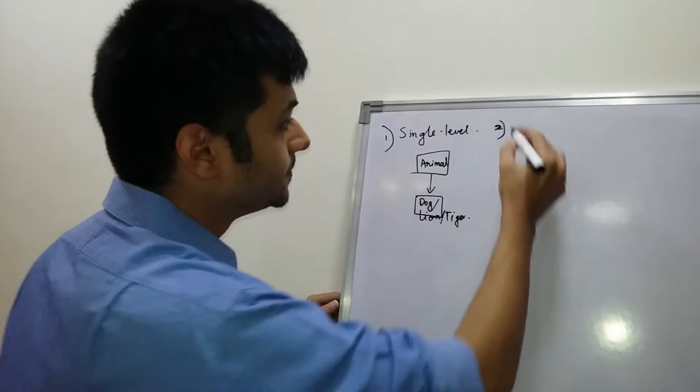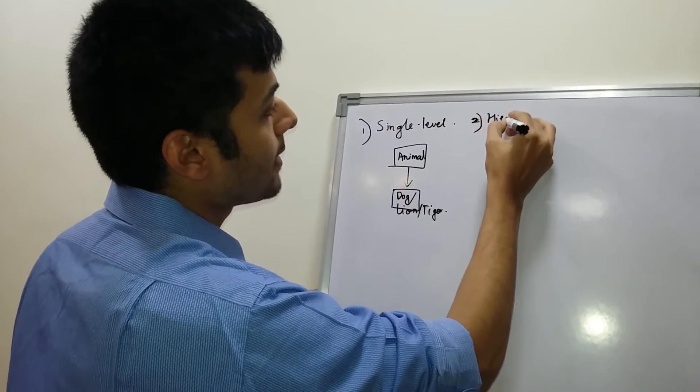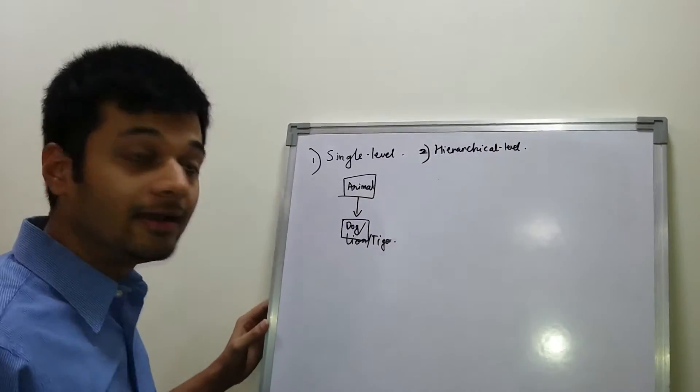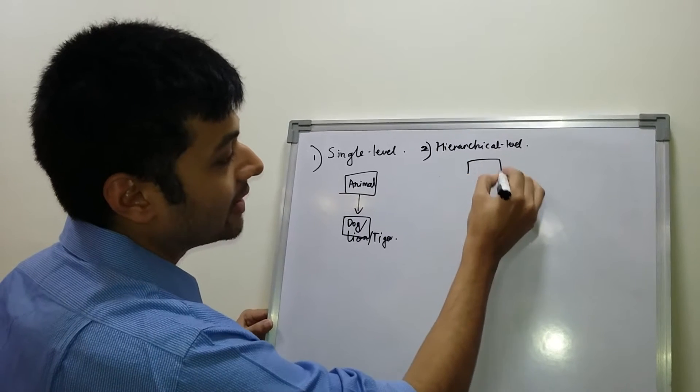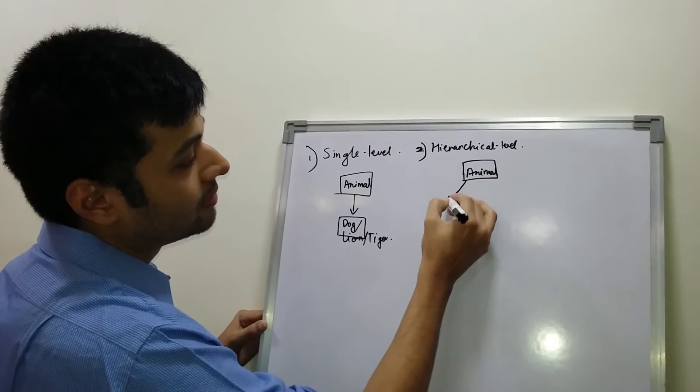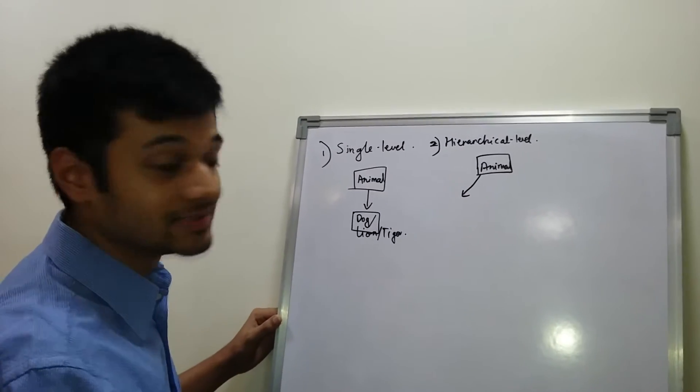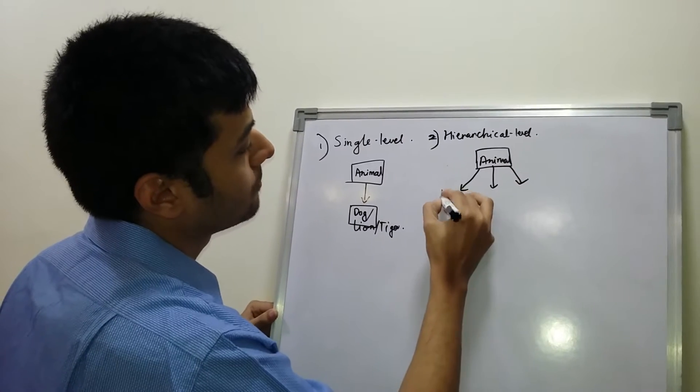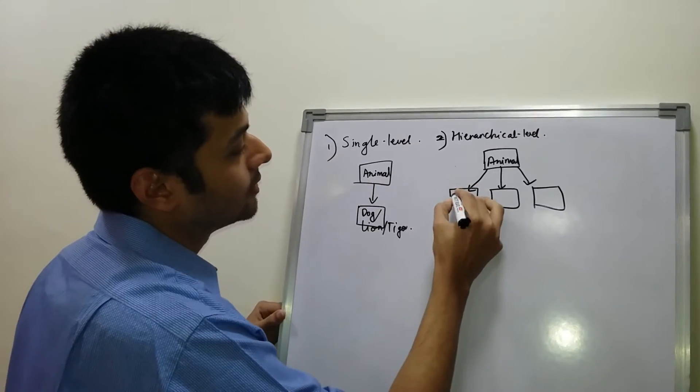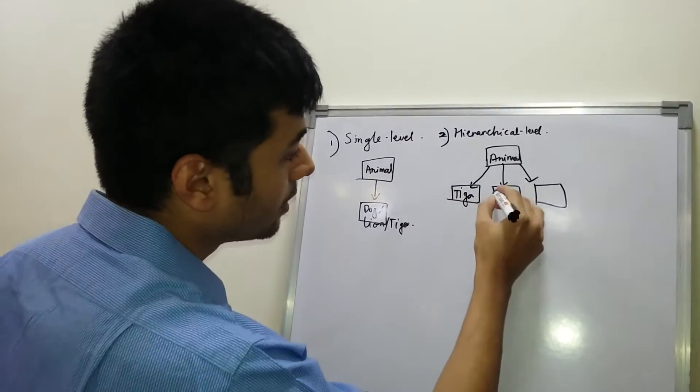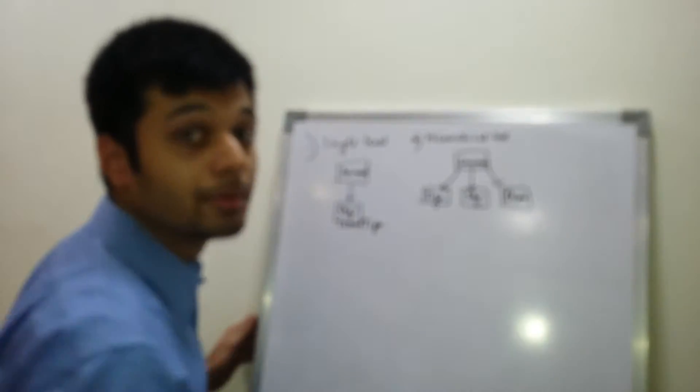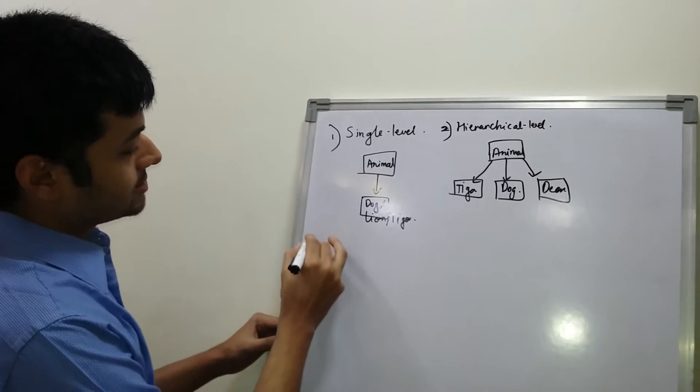The second one is hierarchical inheritance. In hierarchical level, there's one base class, that is Animal, and multiple derived classes like Tiger, which is a wild animal, Dog, which is a domestic animal, and Deer, which is a herbivorous animal.